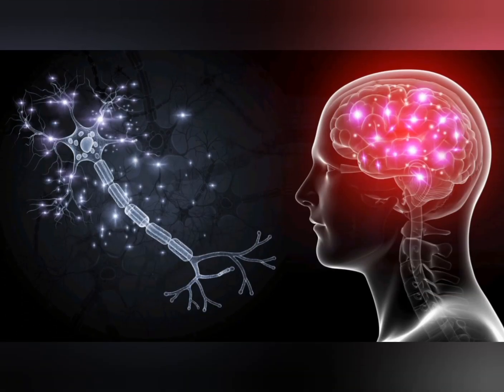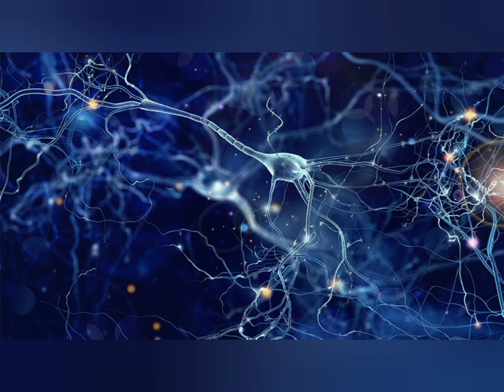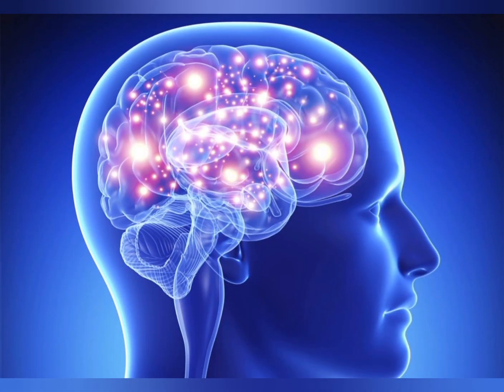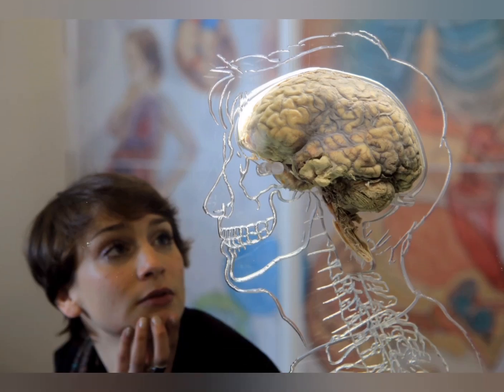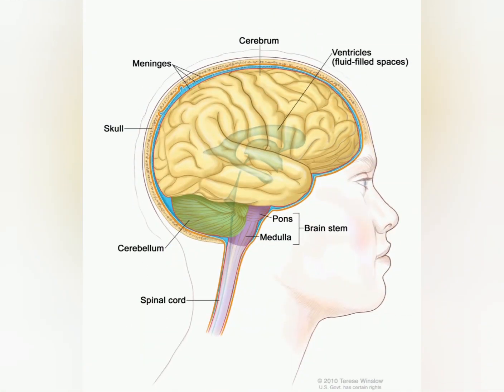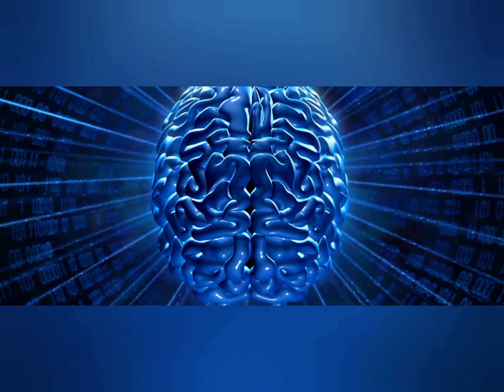Number four: Reading aloud and talking often to a young child promotes brain development. Number five: In 2015, the fourth most powerful supercomputer in the world took 40 minutes to simulate just one second of human brain activity.